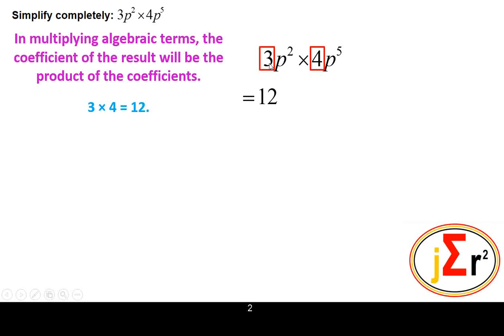So we have the coefficient here is 3, and the coefficient here is 4. 3 times 4 is 12.